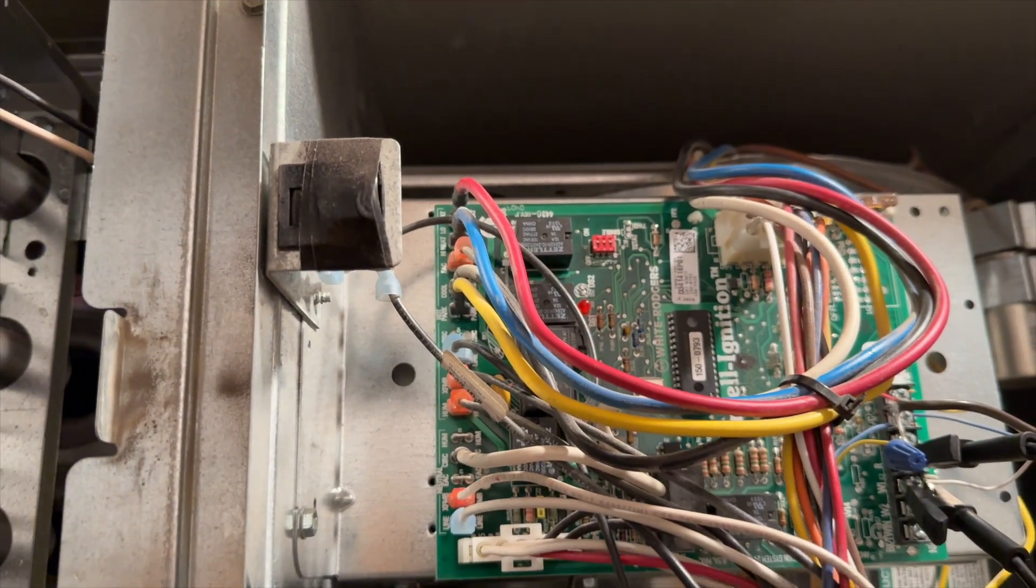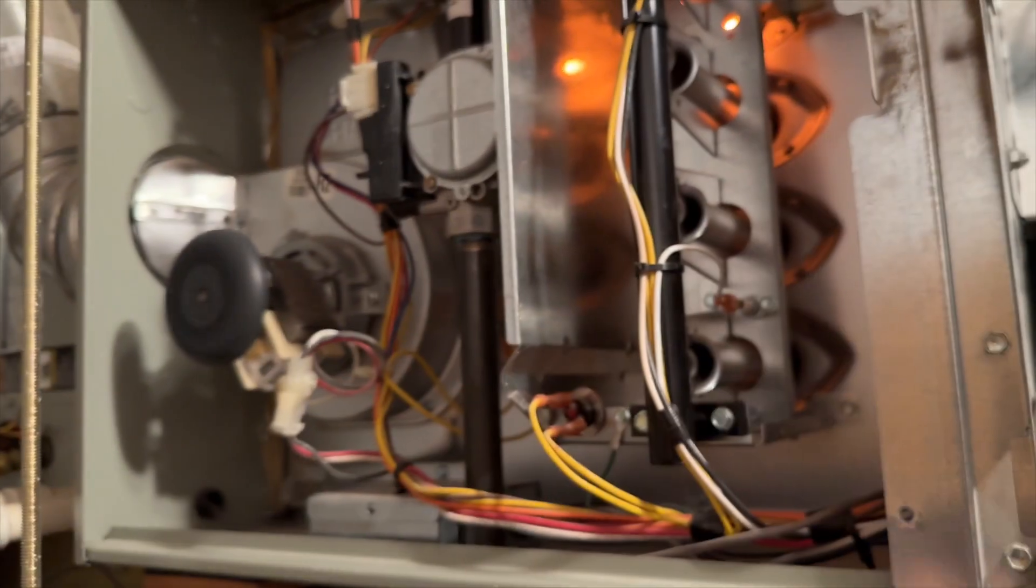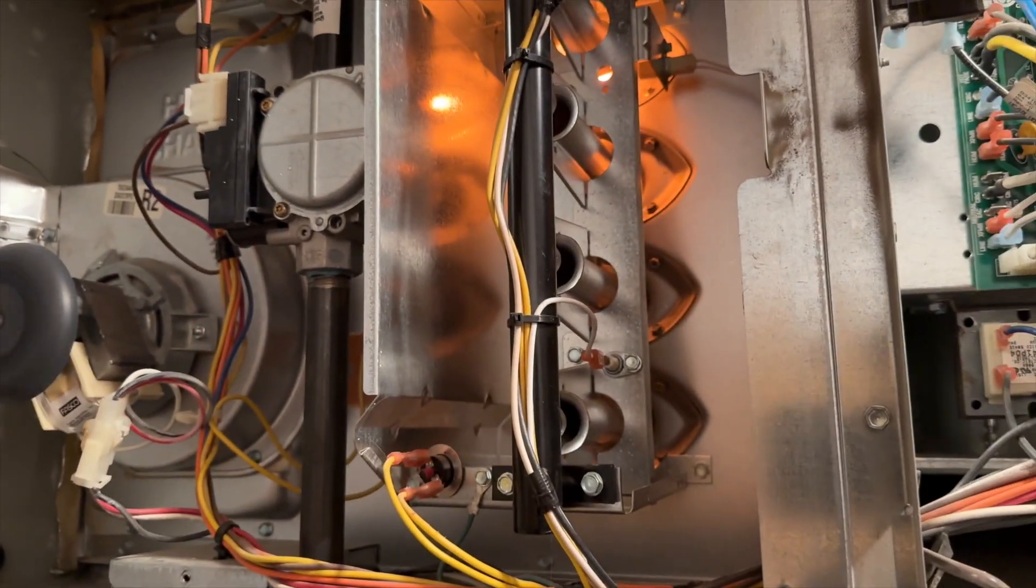Okay, we don't have an error code. Igniter kicked on. So our pressure switch is good. It's just the board's messed up. So we'll go ahead and make sure it fires, make sure there's no other issues.